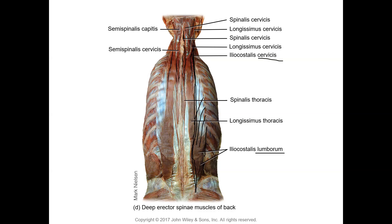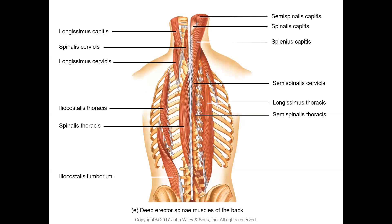The iliocostalis continues from iliocostalis lumborum inferiorly up to iliocostalis cervicis superiorly, attaching to cervical vertebrae at the top. Similarly, you have longissimus cervicis and spinalis cervicis — three groups (iliocostalis, longissimus, and spinalis) each with fibers at different vertebral levels. A model shows the deep erector muscles with beautifully organized fibers — for example, spinalis capitis, spinalis cervicis, and spinalis thoracis overlapping in sequence — allowing smooth rotation and maintenance of posture.